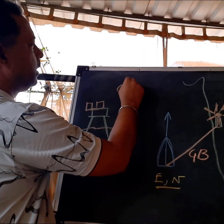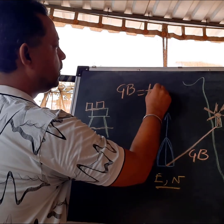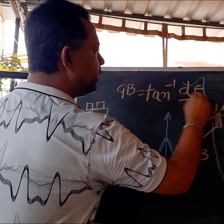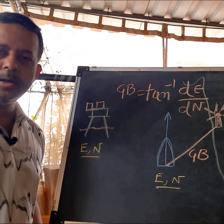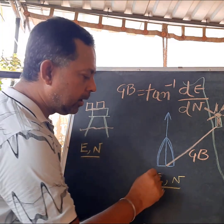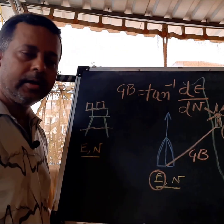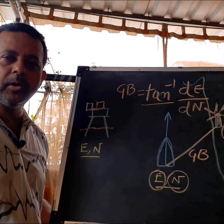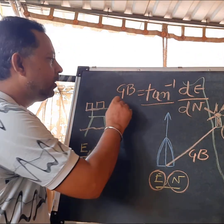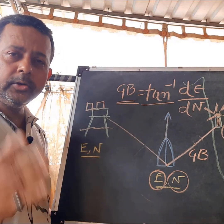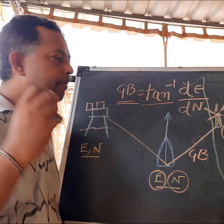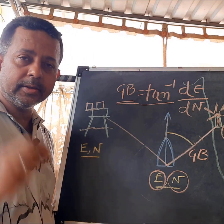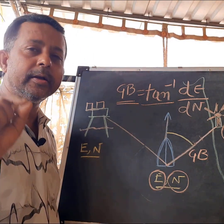What is the formula for grid bearing? Grid bearing is equal to tan inverse of delta easting divided by delta northing. You just have to find out the difference between the easting and the difference between the northing, and simply use the tan formula — delta easting divided by delta northing gives you the grid bearing. Now that you have found your grid bearing, all you have to do is measure the angle with reference to the vessel's fore and aft line to that distant object. The distant object has to be very tiny so there is no error in your angle measurement.